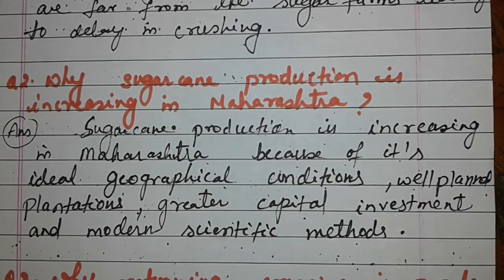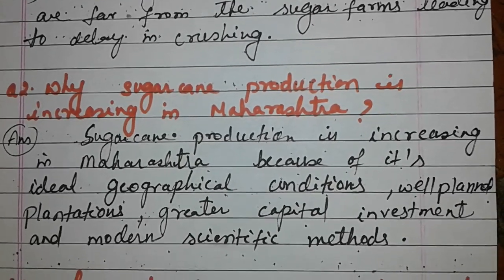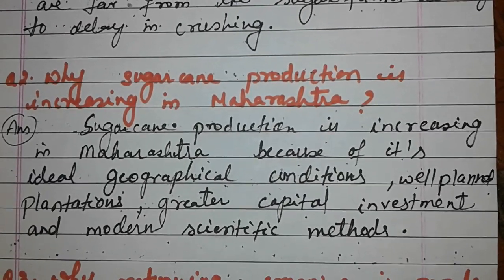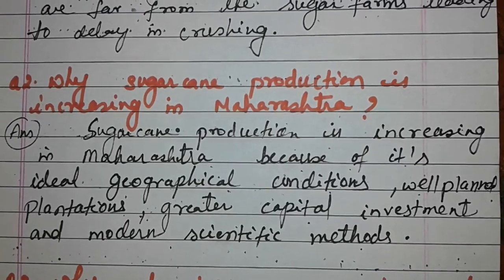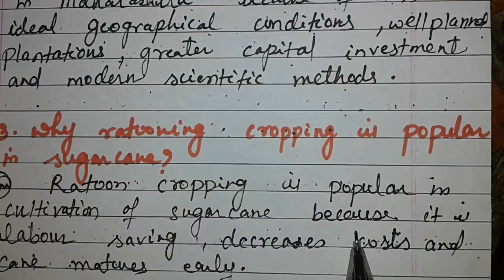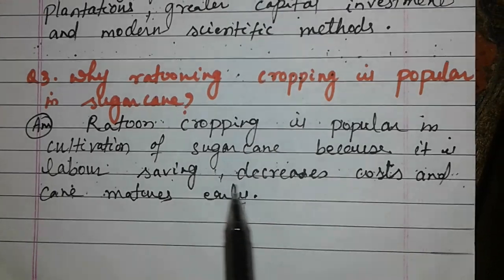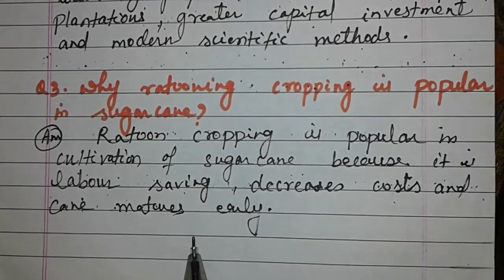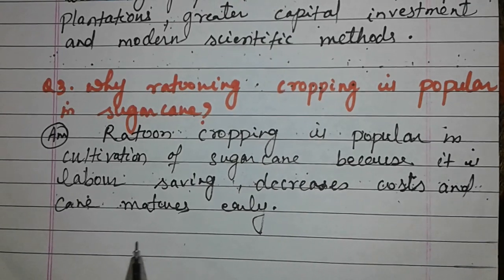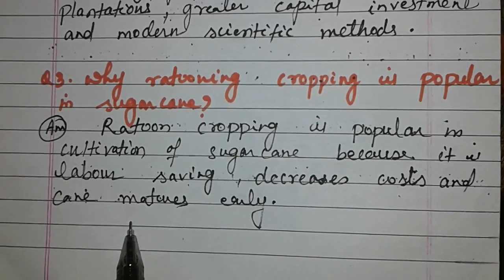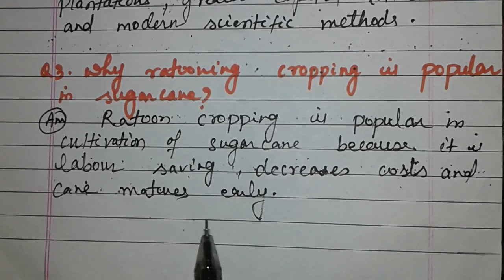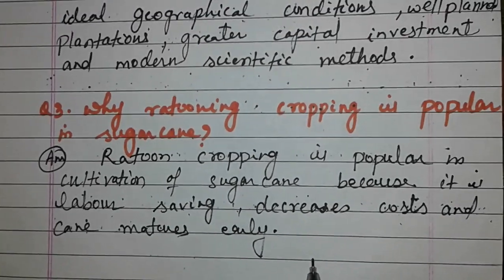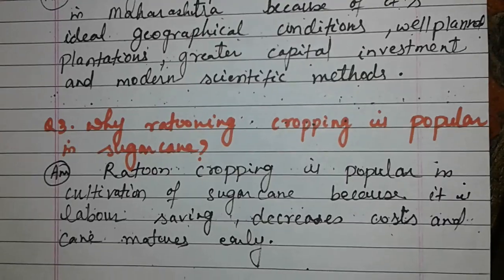Question: Why is ratoon cropping popular in sugarcane cultivation? Answer: Ratoon cropping is popular in sugarcane cultivation because it is labor-saving, decreases cost, and canes mature earlier. However, one demerit is that repeated ratoon cropping may lead to less sugar content in the sugarcane. Please learn sugarcane. Thank you, children.